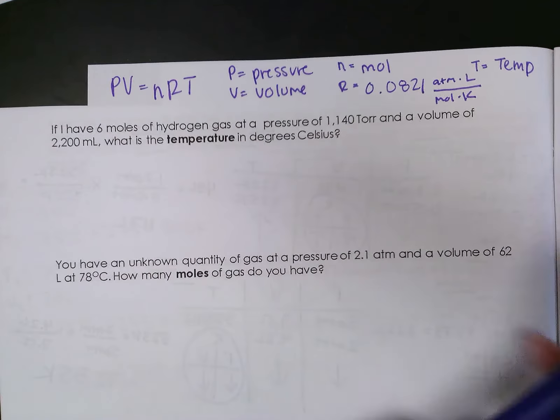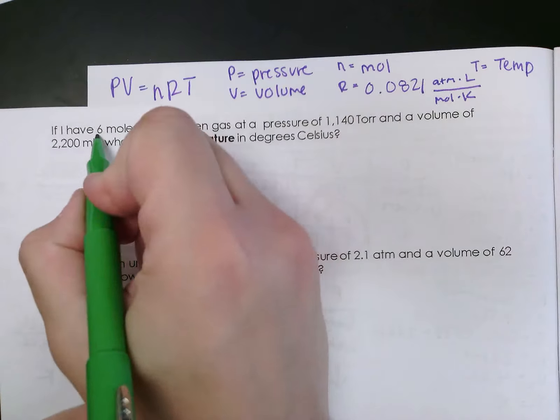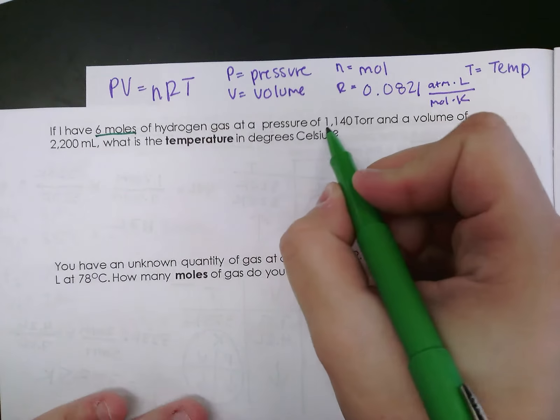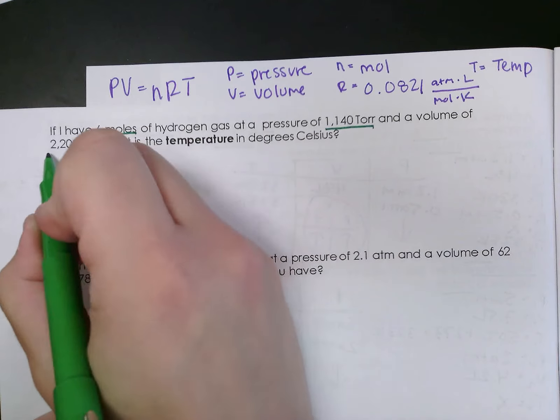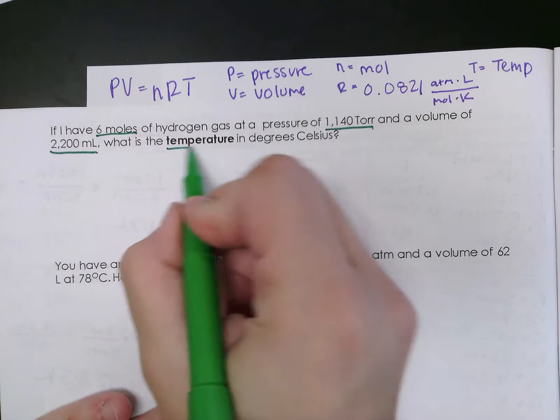So let's look at an example. Just like I have been, I'm going to underline the pertinent information, or at least my numbers. If I have 6 moles of hydrogen gas at a pressure of 1,140 torr and a volume of 2,200 milliliters, what is the temperature in degrees Celsius?